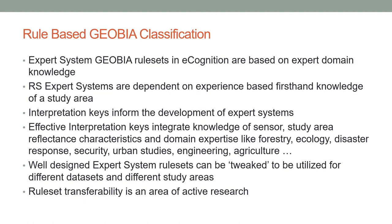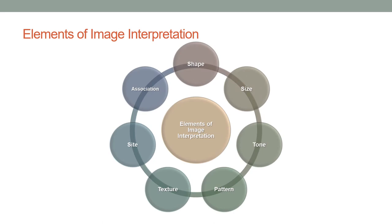The elements of image interpretation are very important in constructing an interpretation key that helps in GEOBIA classification. This involves an examination of the shapes of the objects, the sizes of the objects, the tone or spectra or color of the objects, the patterns that the objects display in the scene, the texture — which refers to the seeming roughness or smoothness of a surface — the location of it, and the association of it with other neighboring objects around it.